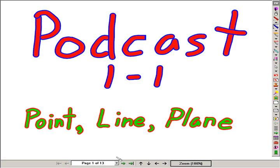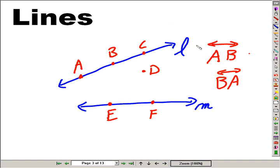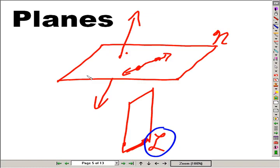So in review, this podcast deals with points, capital printed letters, lines, using small script letters, or if points are available, we can use the capital printed point letters to name the line. Collinear means points are lined up, planes, flat surfaces that go forever. So we draw these sort of boundaries, horizontal, vertical.